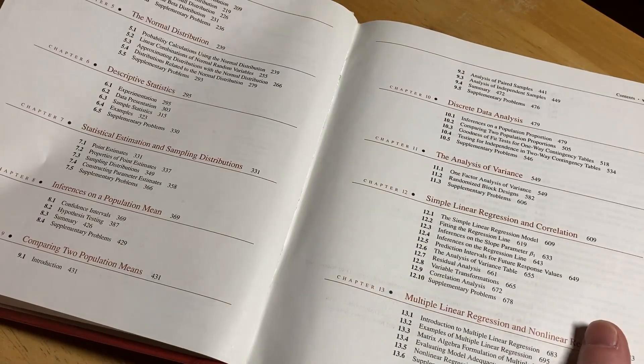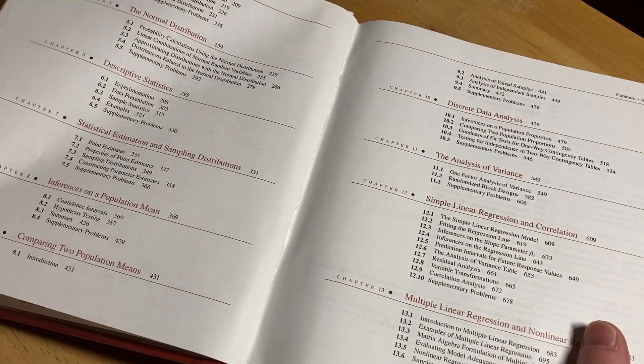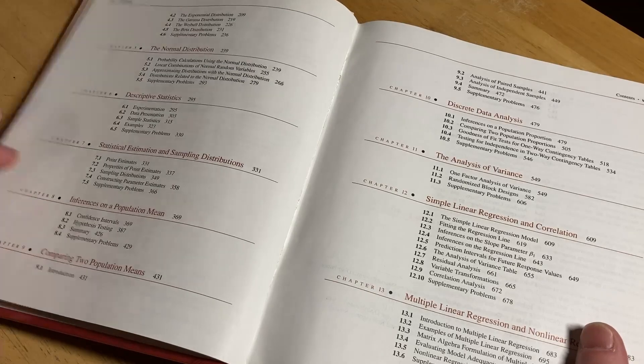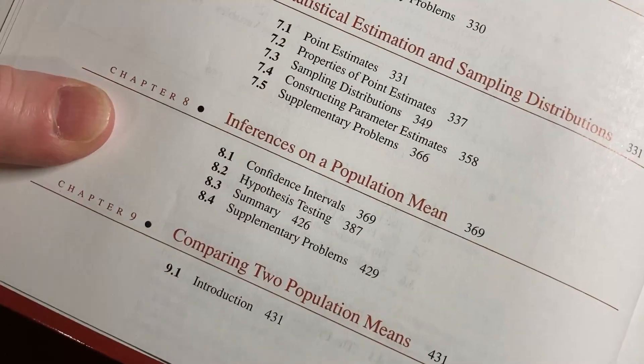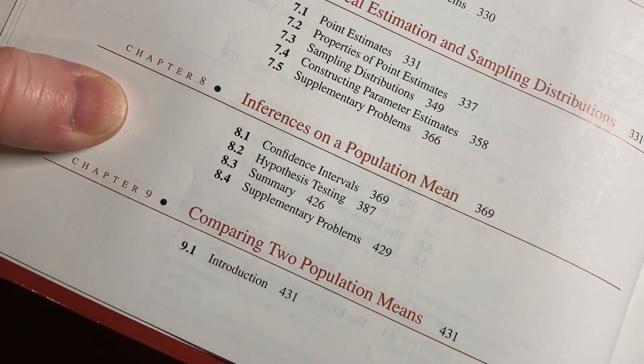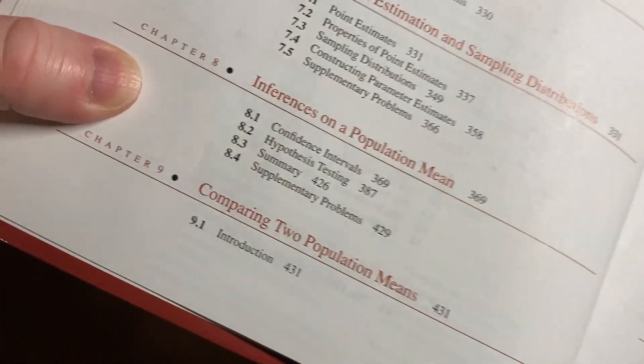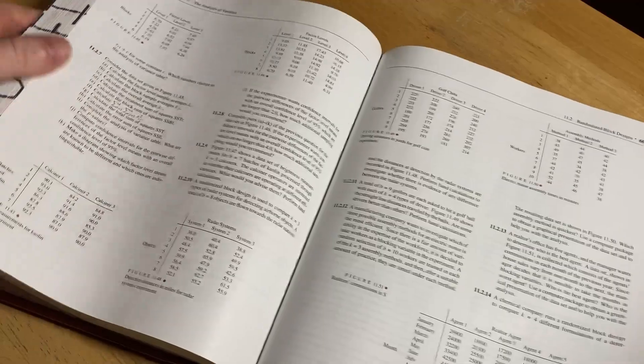Really good topics. Let's go to inferences on a population mean. That's in chapter 8, page 369. Let's take a look at that.